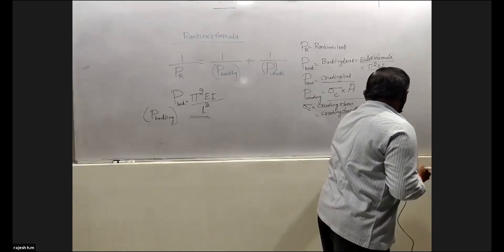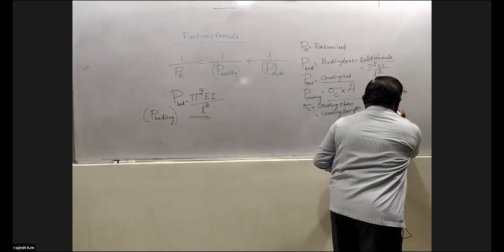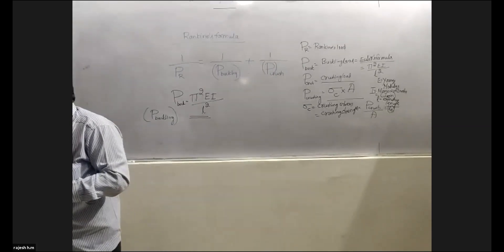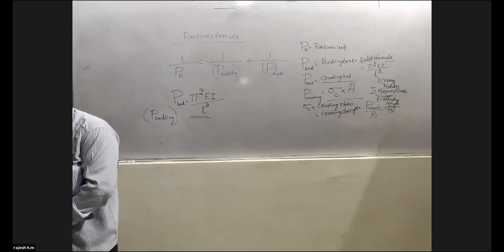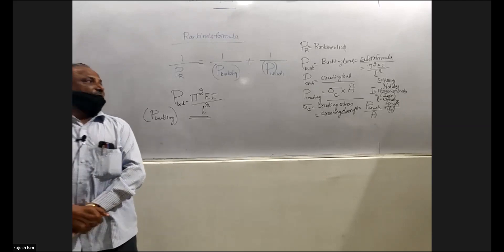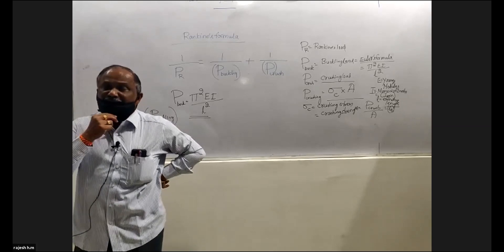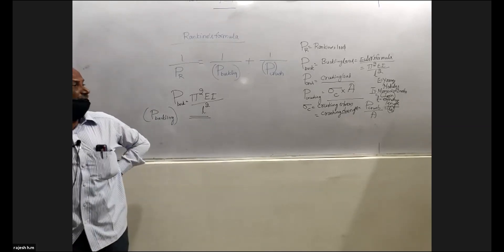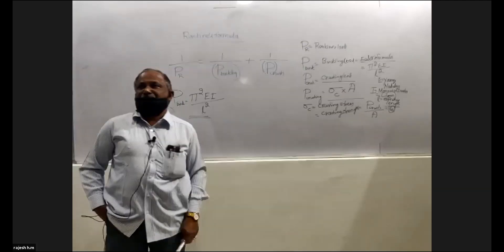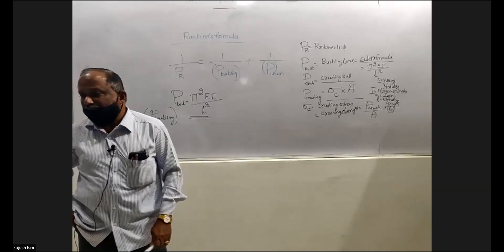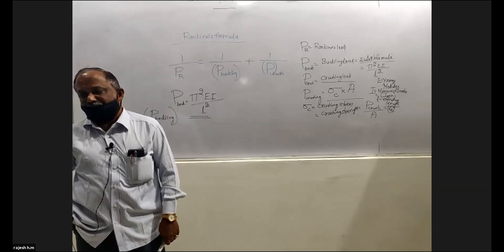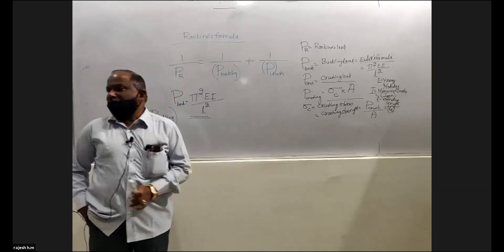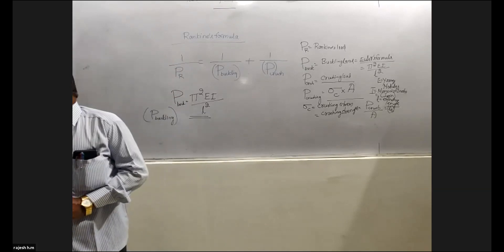You take that value as L_e, effective length. So that is Euler's formula. Take note here: Euler's formula is valid for long columns only, because it handles buckling loads. That is a limitation of Euler's formula.